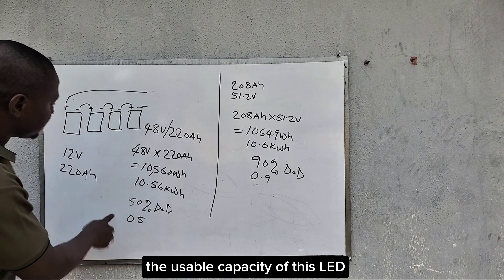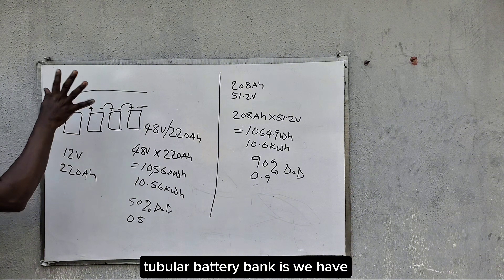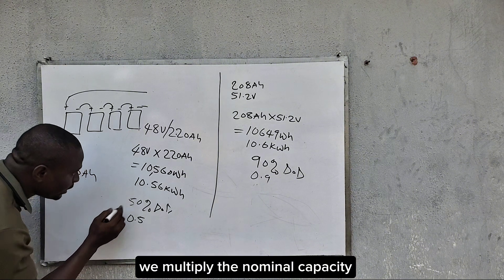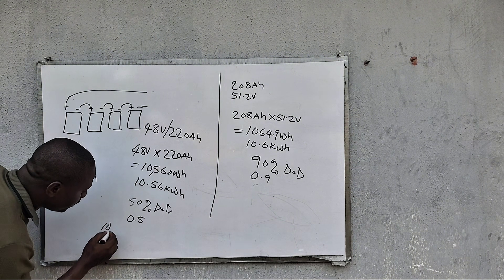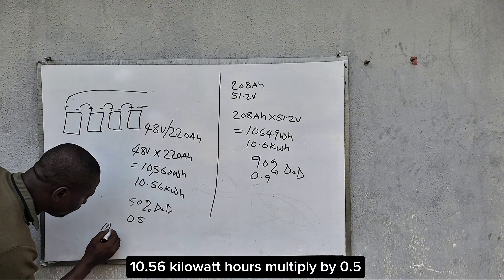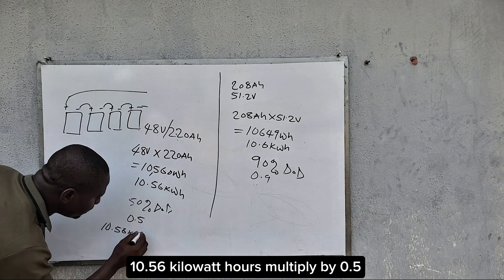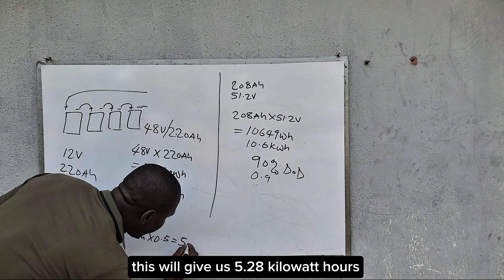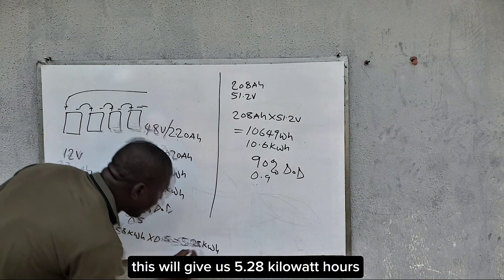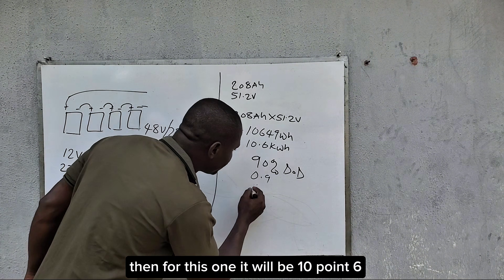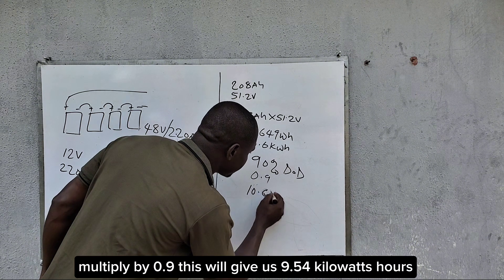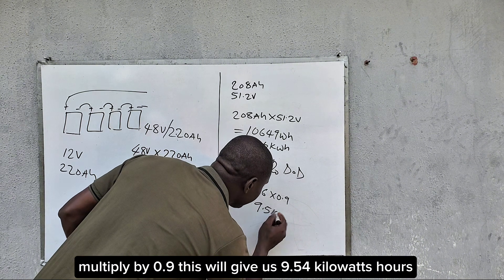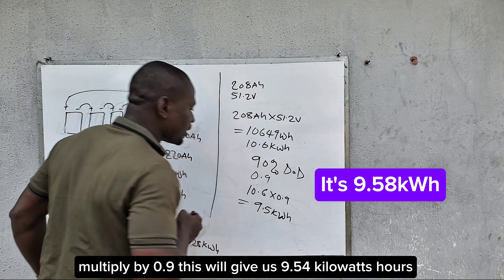So with 0.9 DoD for lithium and 0.5 for lead acid, the usable capacity of the tubular battery bank is: nominal energy 10.56 kilowatt hours multiplied by 0.5, which gives us 5.28 kilowatt hours. For the lithium battery it is 10.6 multiplied by 0.9, which gives us 9.54 kilowatt hours.